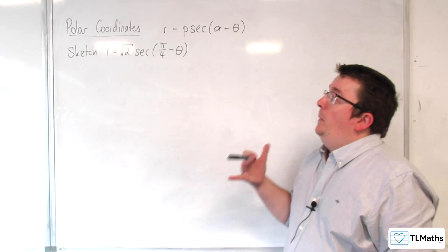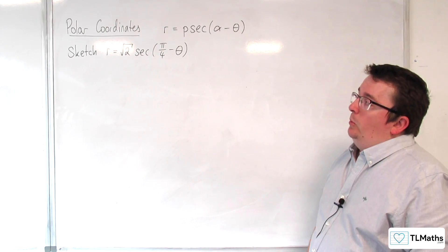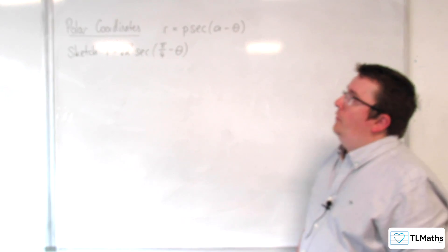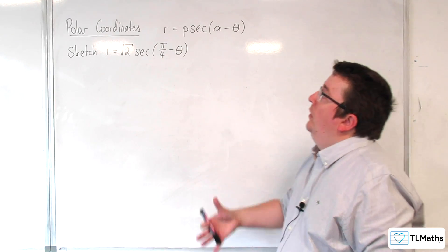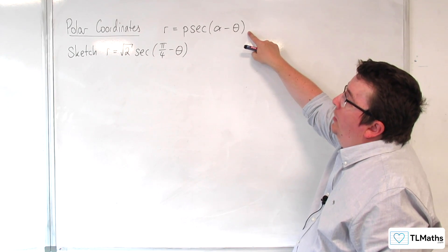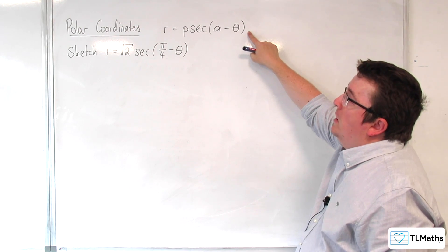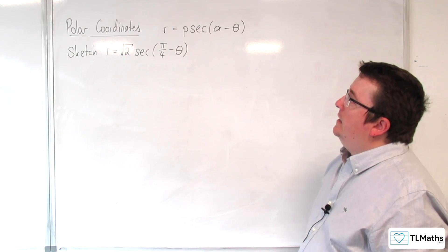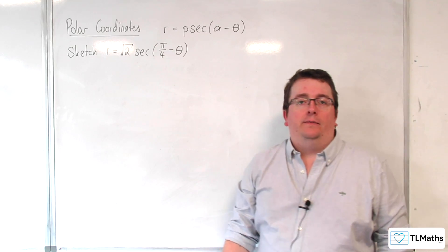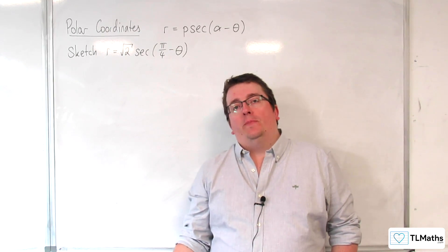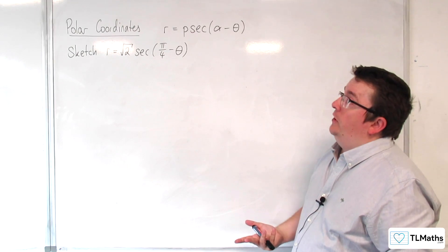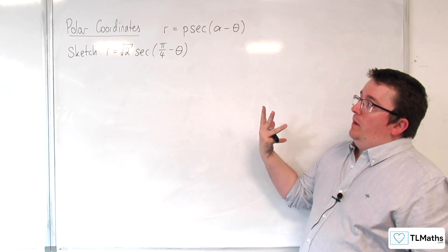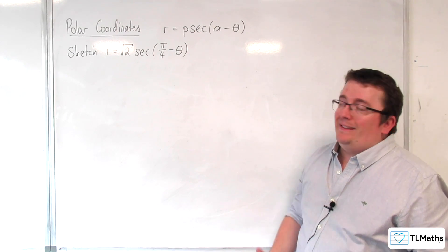In this video, we're going to be looking at sketching r equals root 2 sec of pi over 4 take away theta. Now, this is a particular case of this type of polar graph: r equals p sec alpha take away theta. And hopefully through this example, you'll be able to see what you should do about sketching this type of graph and what type of graph you'd be expecting to get.